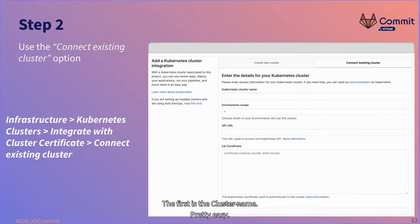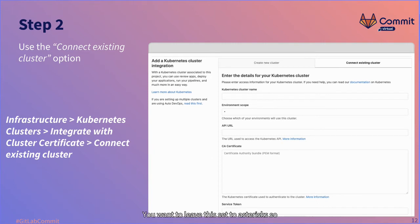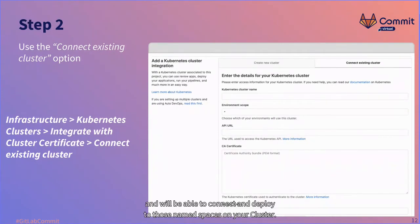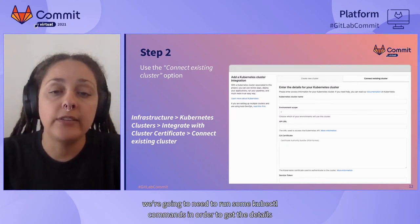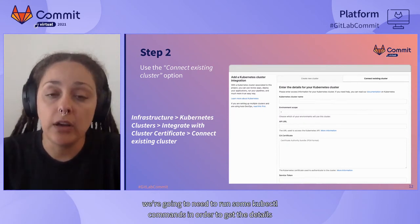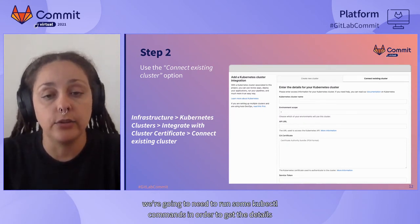The first field is the cluster name — pretty easy. Then you'll notice the environment scope option again. Leave this set to asterisk so all of your environments will be accessible on your CI/CD pipelines and will be able to connect and deploy to those namespaces on your cluster. For the rest of the details, we're going to need to run some kubectl commands to get the information from our cluster so we can populate them on the form.